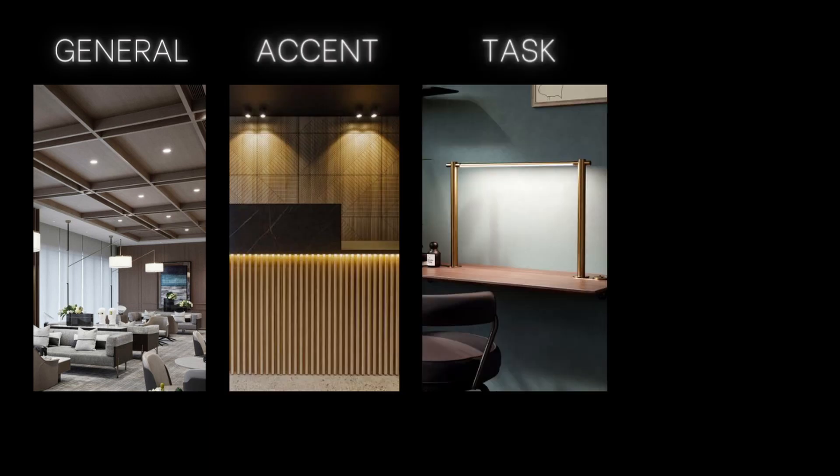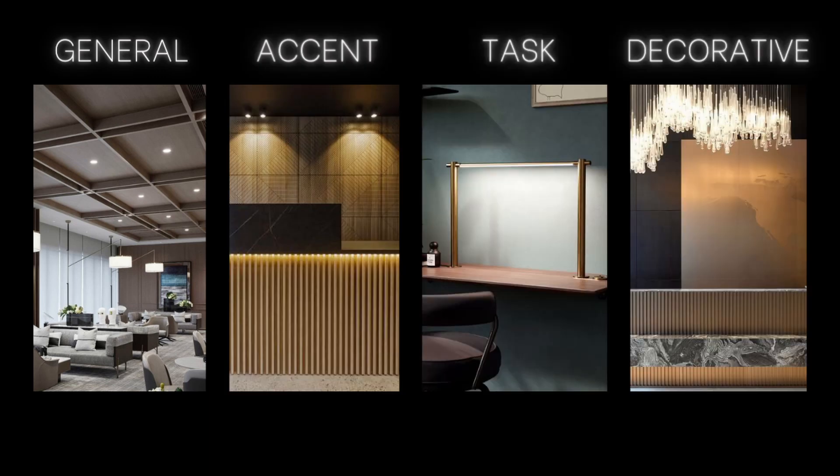When you are choosing lighting for interior design, one of the questions that everyone asks themselves is, where do I even begin? The first thing you need to know is you need to figure out what type of lighting you need for each room. In interior design and lighting design, we categorize lighting in four types: general lighting, accent lighting, task lighting, and decorative lighting.